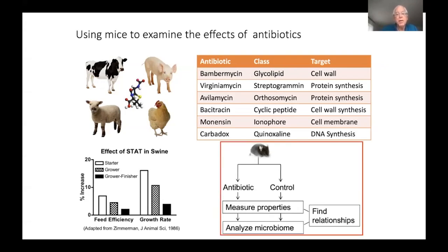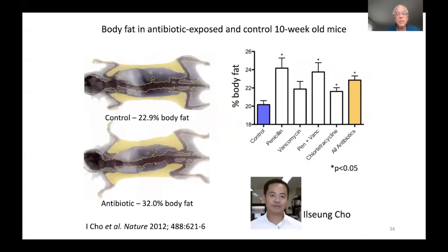We began doing studies looking at the development of mice given antibiotics or not, examining their properties and microbiome. In our first studies — done by Il Sung Cho when he was a postdoctoral fellow — we looked at body fat in antibiotic-exposed and control 10-week-old mice. Mice were given antibiotics at the midpoint of the FDA-regulated dose used on the farm. The mice that received antibiotics were putting on more fat than the controls — our first evidence that antibiotics are changing metabolism in mice.